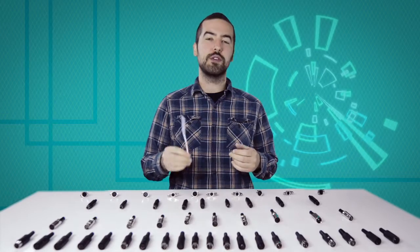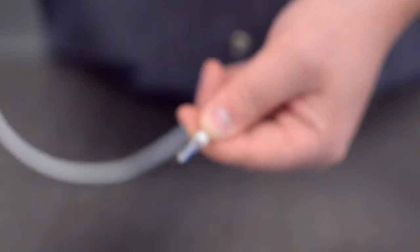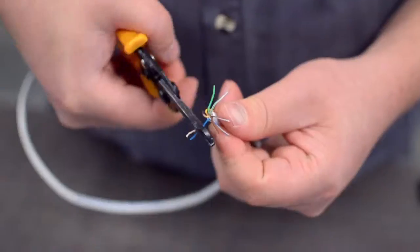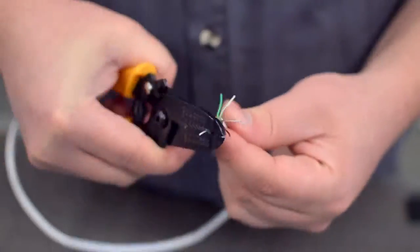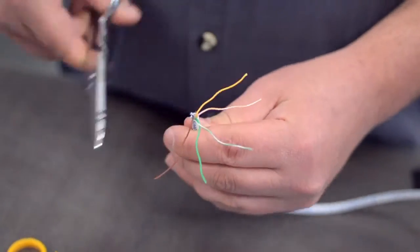For this example, we will be using CAT 5E cable. You will also need to strip the individual conductors. Trim off any additional conductors if needed. Now comes the hard part.